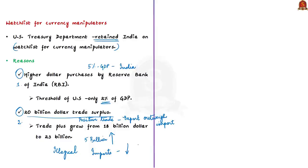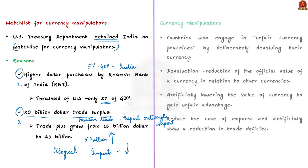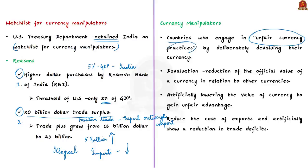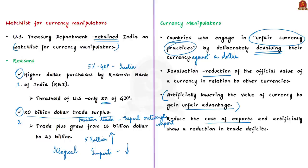The term 'currency manipulator' is a label given by the US government to countries that engage in unfair currency practices by deliberately devaluing their currency against the dollar. Devaluation is the reduction of the official value of a currency in relation to other currencies. This practice means a country is artificially lowering its currency's value to gain an unfair trade advantage, reducing the cost of exports and artificially showing a reduction in trade deficits.